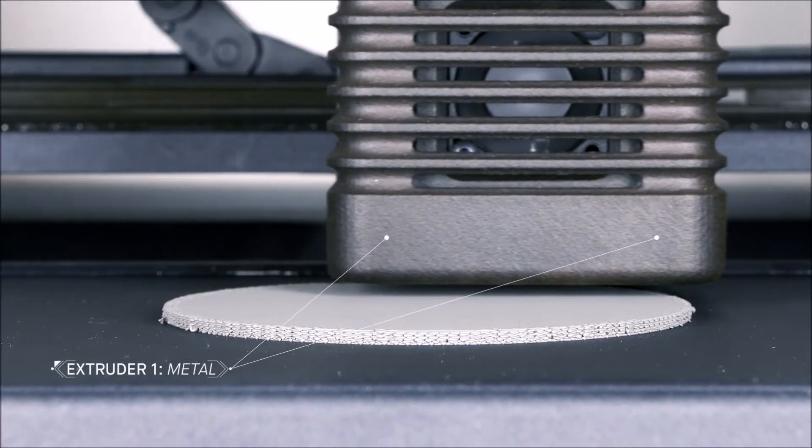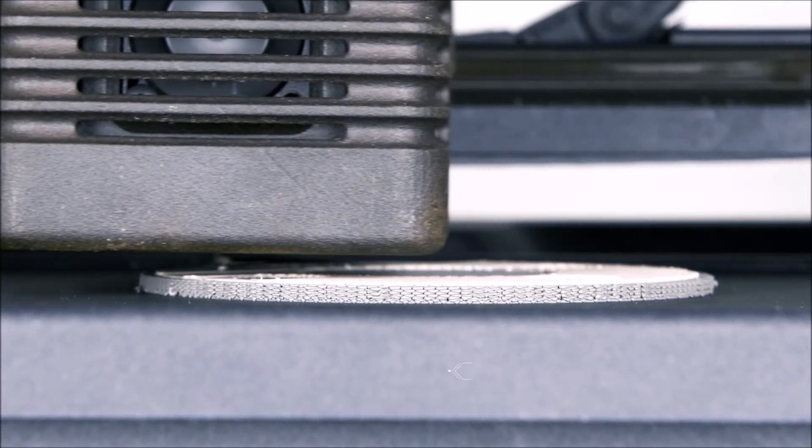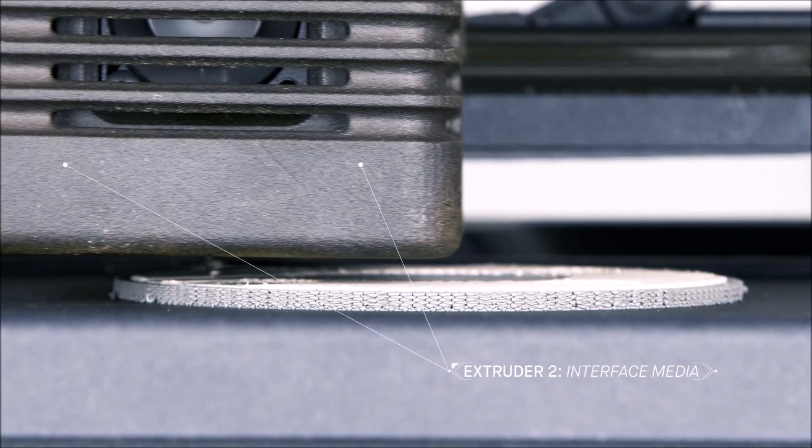There are two extruders: one dedicated to printing metal and the other for an interface layer printed between the part and its supports.